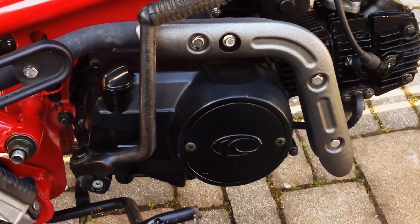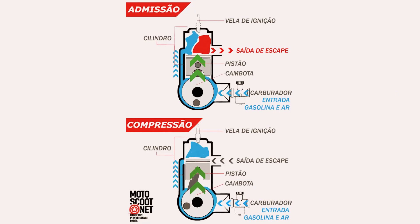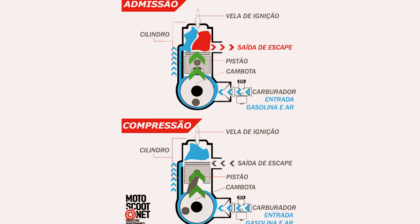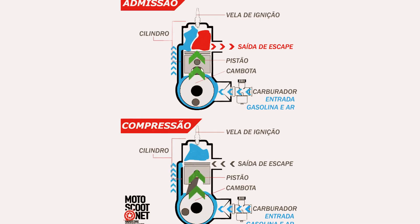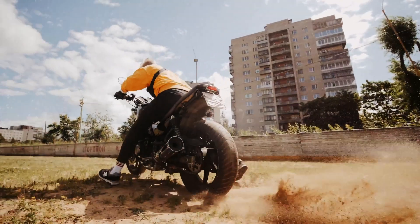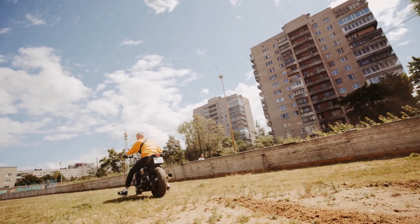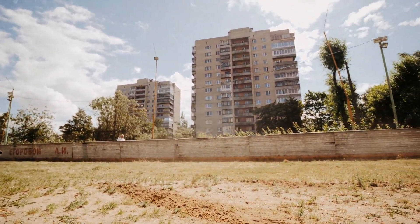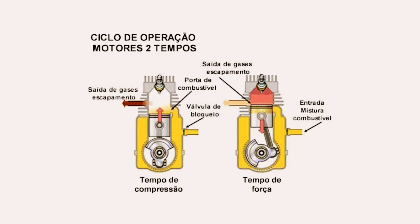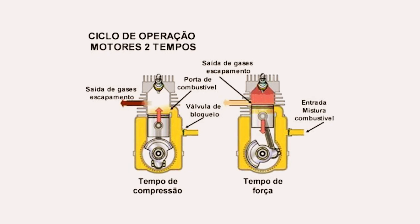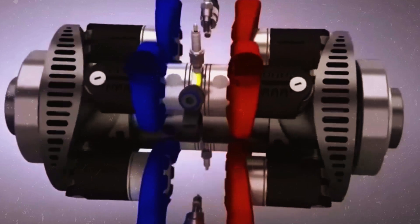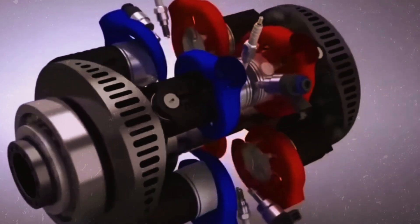But what does this signify? Every engine follows a specific operational cycle. In some engines, this involves four phases: intake, compression, combustion, and exhaust, known as four-stroke engines. Conversely, the more compact and potent two-stroke engines encompass only two primary phases, compression and combustion, with intake and exhaust occurring almost simultaneously.